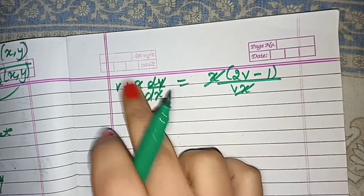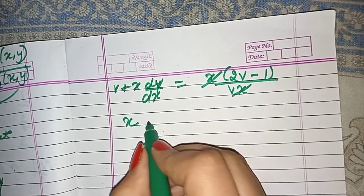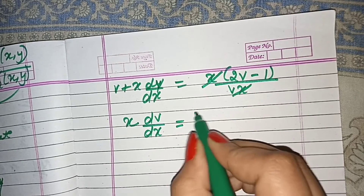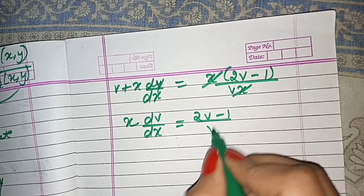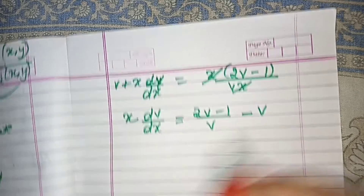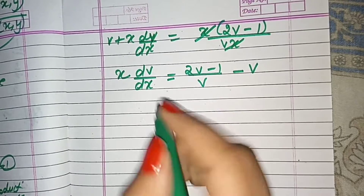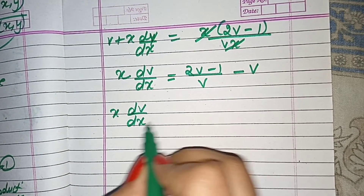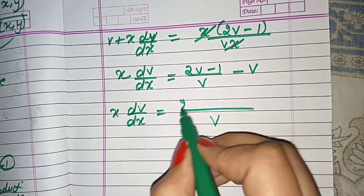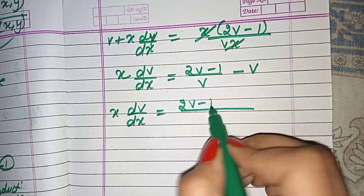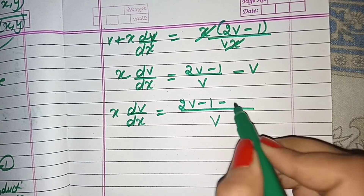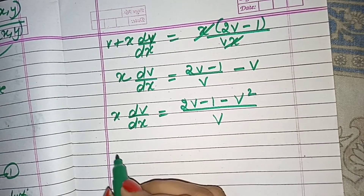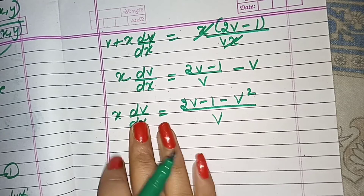So: v plus x dv over dx equals x times (2v minus 1) over vx. The x and x cancel, and then v on the left-hand side moves to the right-hand side with a minus. So we get x dv over dx equals (2v minus 1) over v, minus v. Taking LCM, x dv over dx equals (2v minus 1 minus v²) over v.